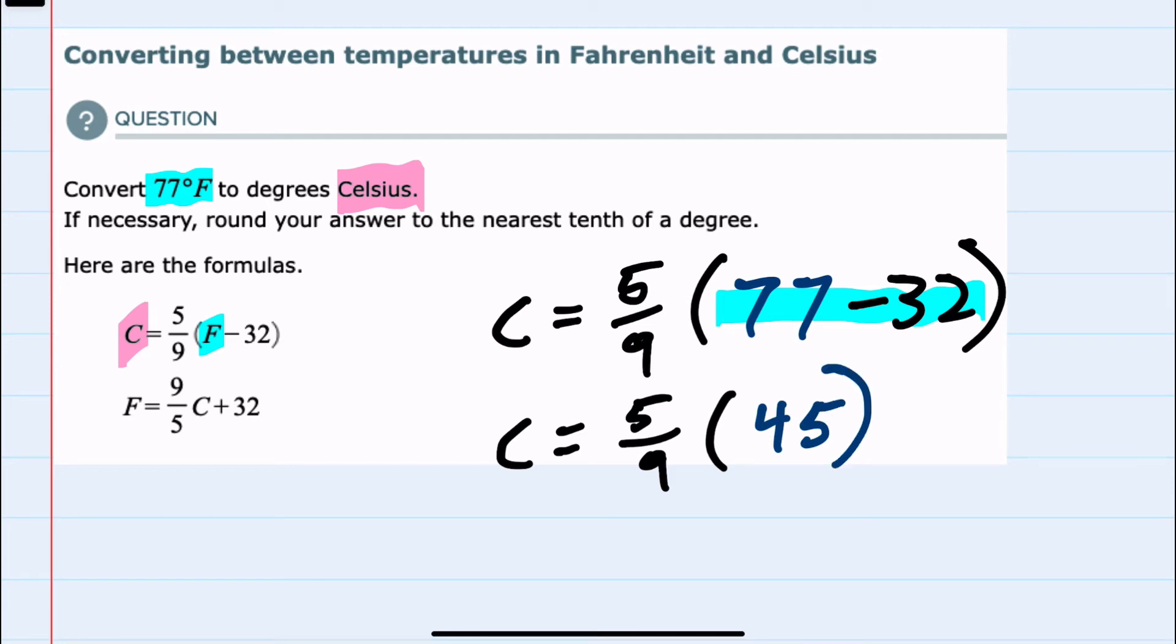And then for our next step, we would want to do this multiplication. And since we have a fraction, 5 ninths, I could rewrite the 45 as 45 over 1.